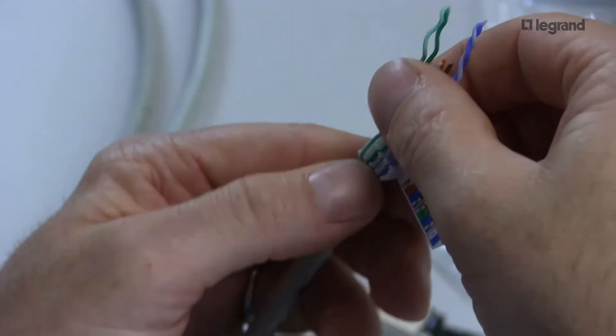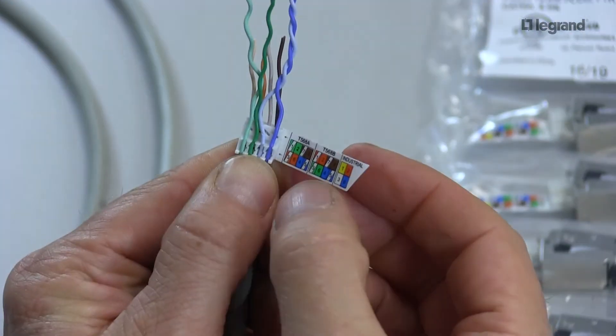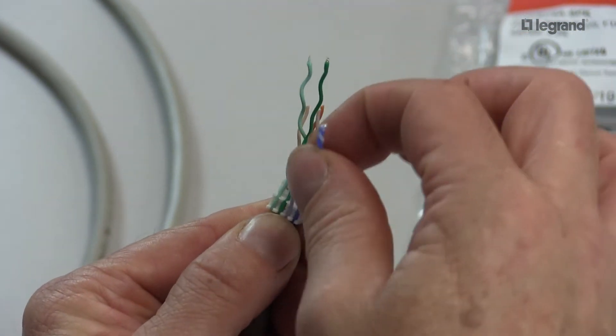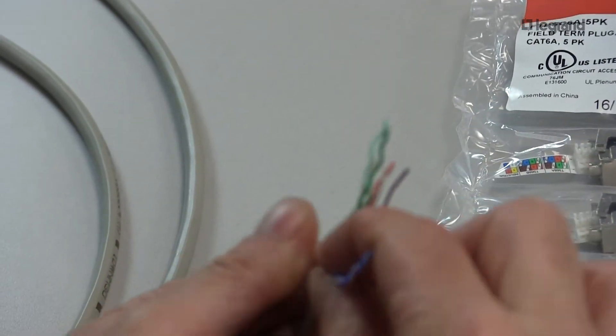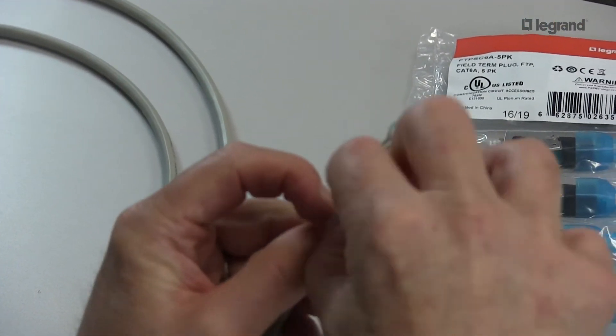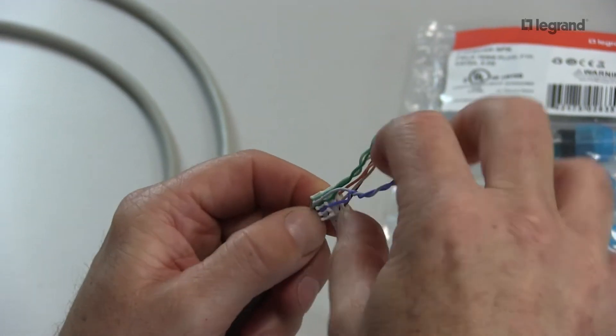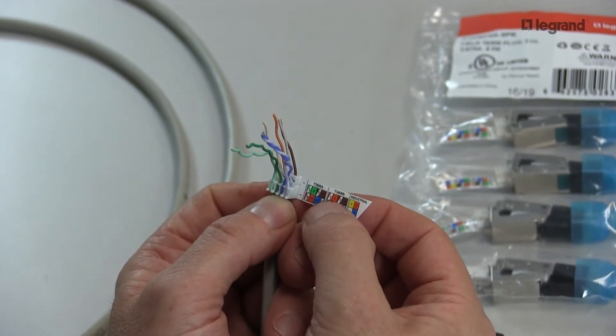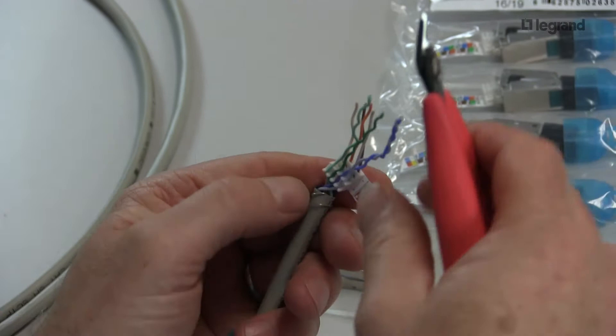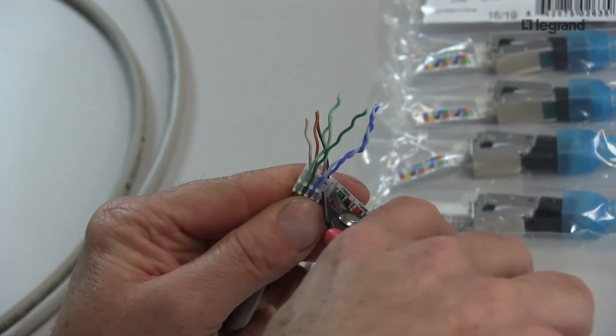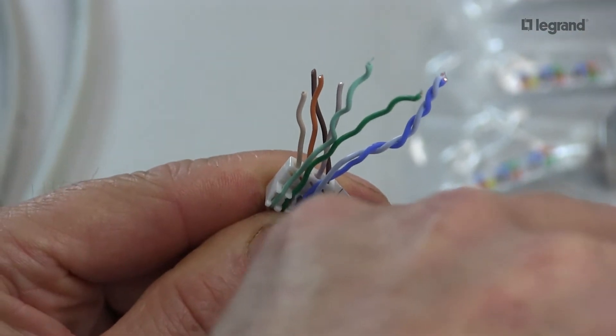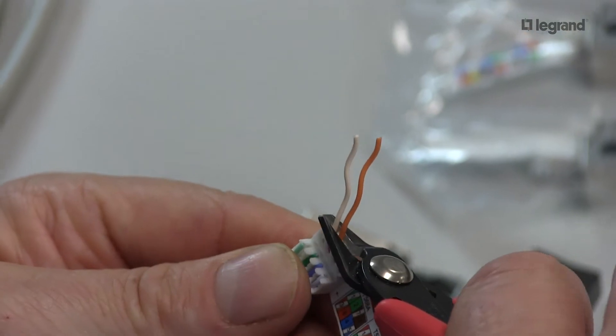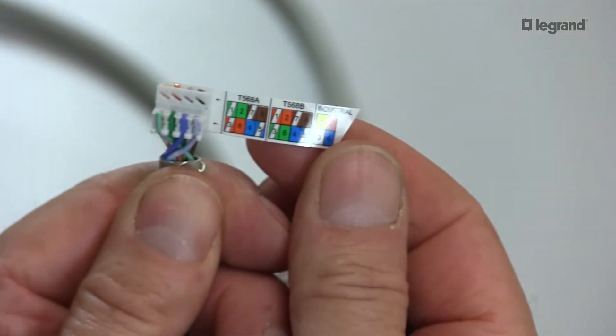Of course, the last thing I'm going to do before I trim is going to check my color code. White-green. Green-white. Look at that. Blue-white-blue. Always double-check. One second of checking now saves a lot of time later. The bottom. White-orange, orange, white-brown, brown. Take your angled cutters and trim flush to the edge.